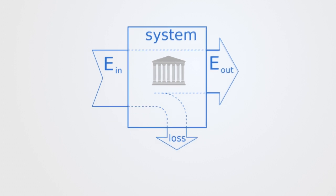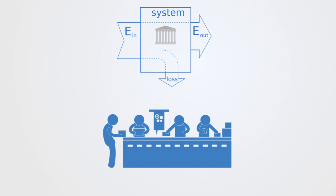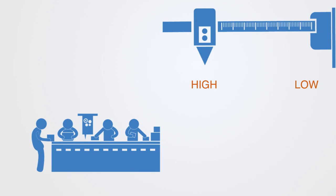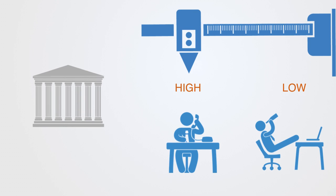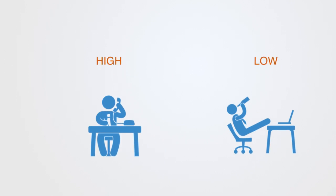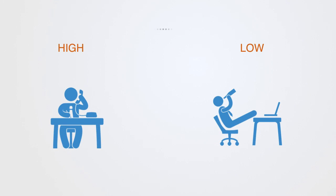Systems perform their function only ever to some degree of efficiency. With any system, we can define a simple parameter that maps from a low level of efficiency to a high level of efficiency. This is largely a theoretical construct, as with real world complex systems like institutions, efficiency is rarely well defined. But this theoretical construct does help us in structuring our reasoning. This degree of efficiency is a very fundamental parameter to a system, that really defines its manifest state.